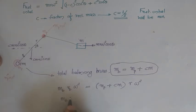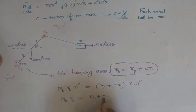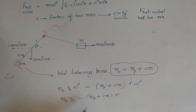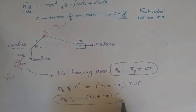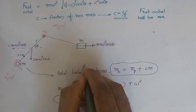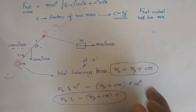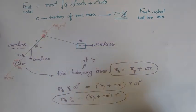The condition for balancing is m_b·r_b = (m_p + c·m)·r, where r is the crank radius. If the balancing mass is placed at the same crank radius r, then m_b = m_p + c·m. If r_b differs from r, this equation is used to find the required balancing mass. This formula will be applied to solve numerical problems in the next video.